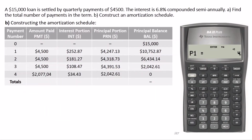Now that we have the principal and interest portions of the last payment, their sum gives us the size of the last payment: $2,077.04. Once all payment values are entered, we add a row for total values. The total values can be used to cross-check if calculations are correct. The total principal portion should equal the original loan amount of $15,000, which is the case here.